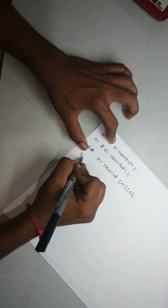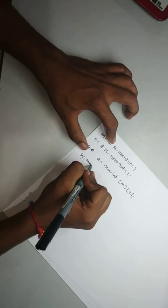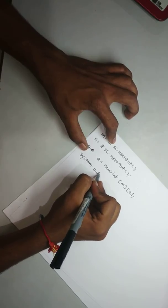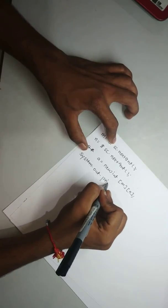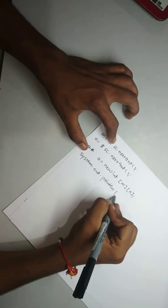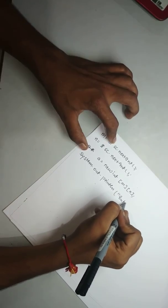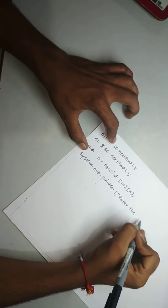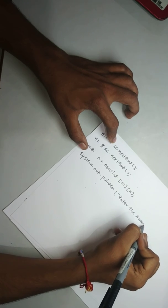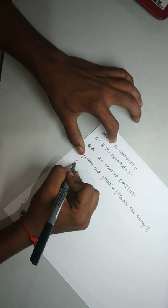Then now we will accept the values from the user. That is system.out.println enter the array. So let's start with the loop.